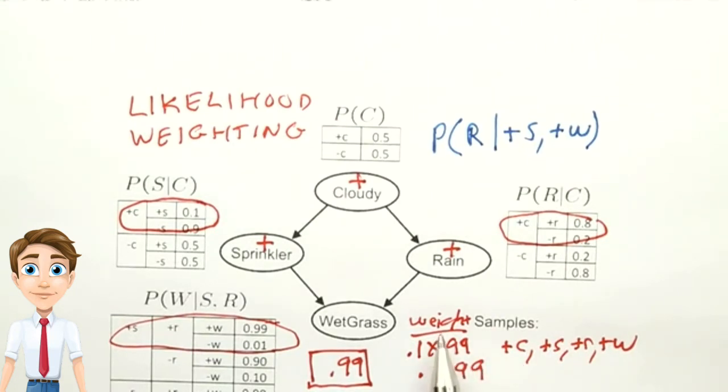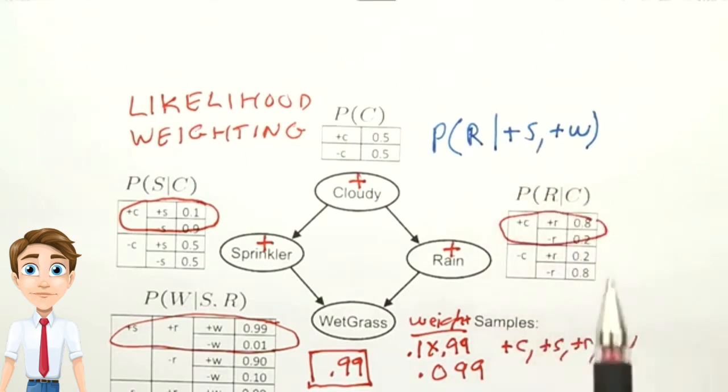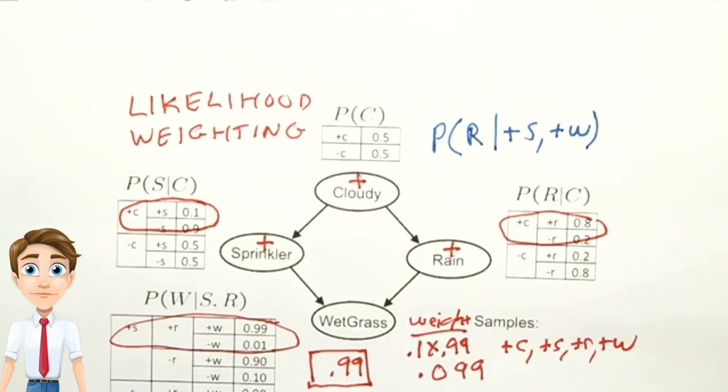When we include the weights, counting this sample that was forced to have a plus s and a plus w with a weight of 0.099 instead of counting it as a full one sample, we find that likelihood weighting is also consistent.